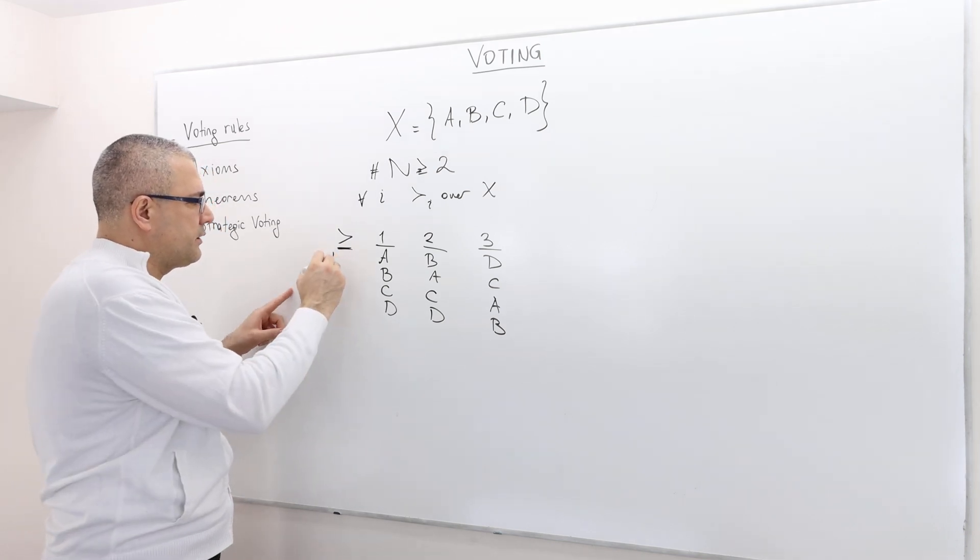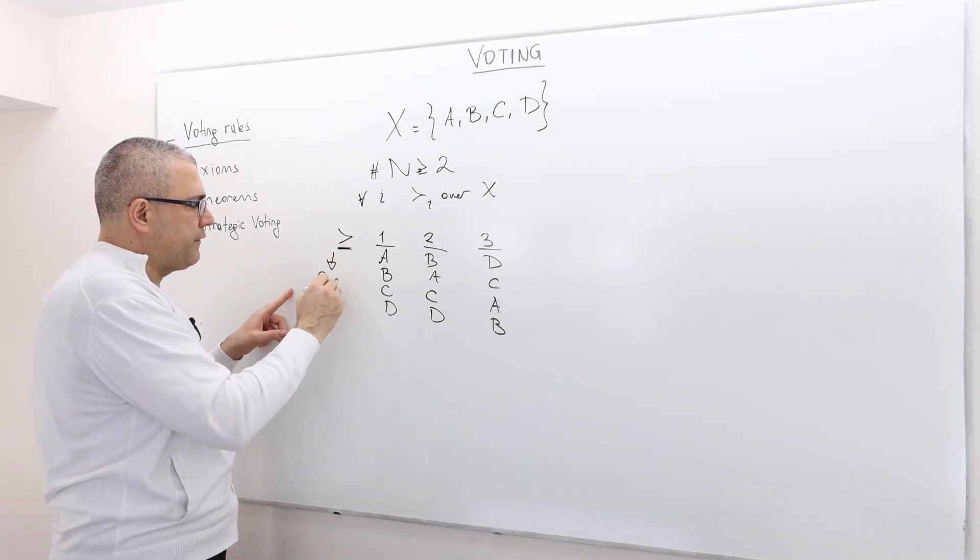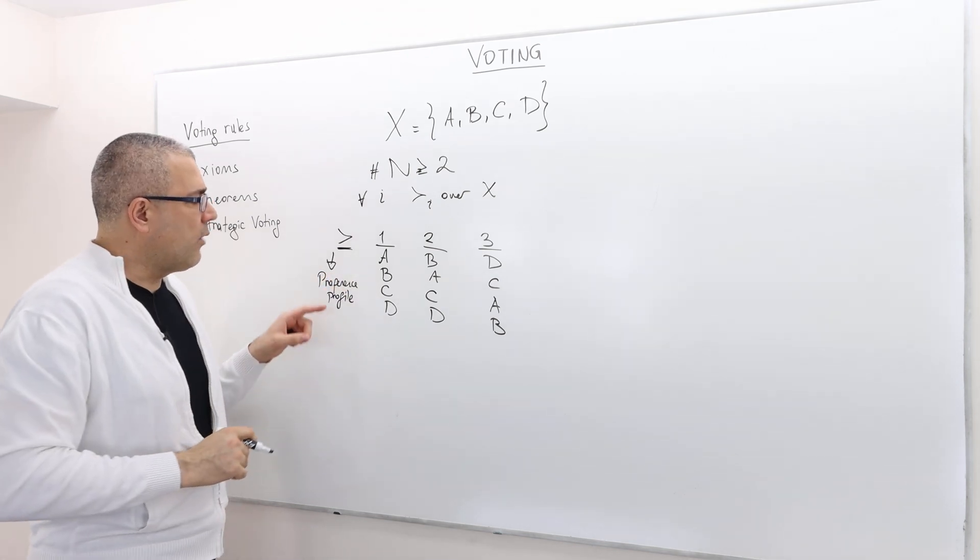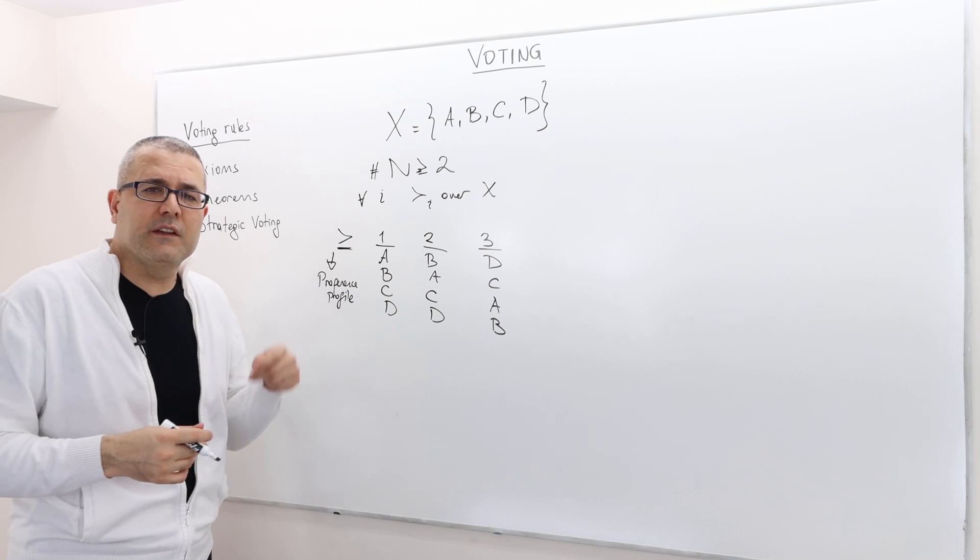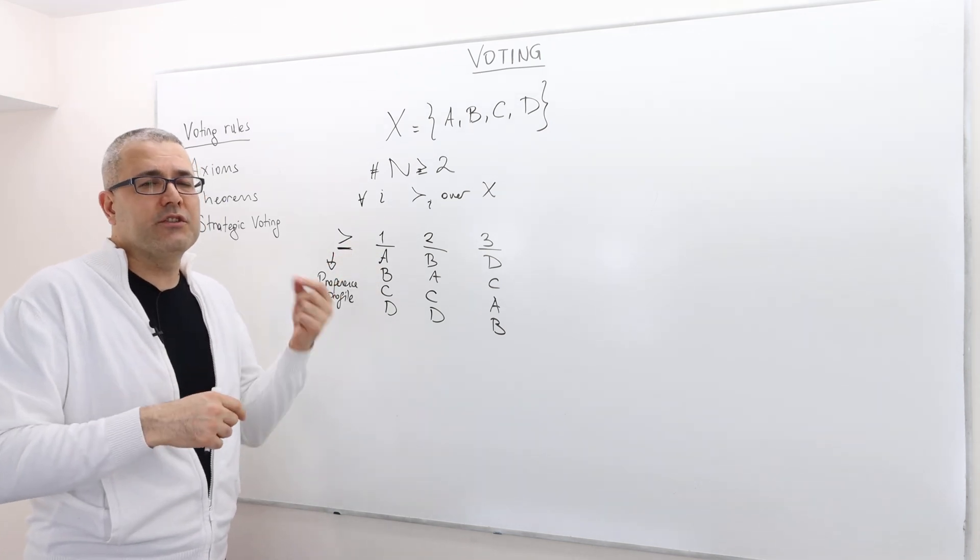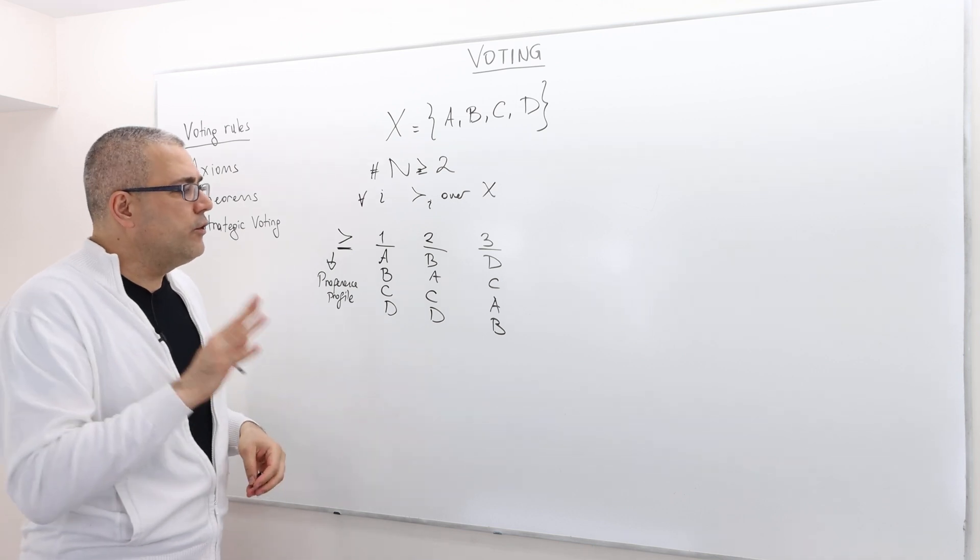The preference profile is basically how each agent ranked the alternatives. You may wonder why we care about the agent's preferences over all alternatives.